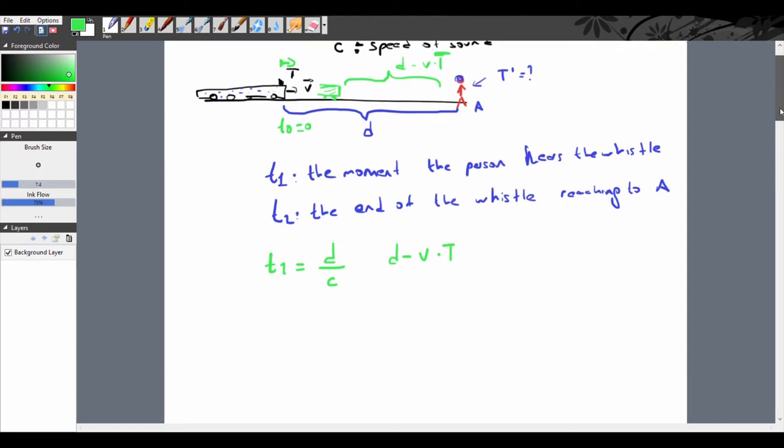Let us calculate how many seconds the end of the whistle takes to reach the person's ear, t2. T2 will be T plus the remaining time between this point and that point. So that will be d minus v times T over c, because the sound travels.